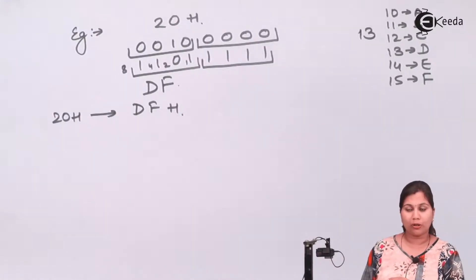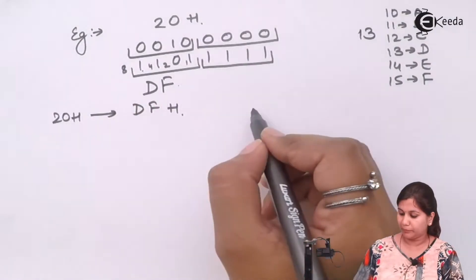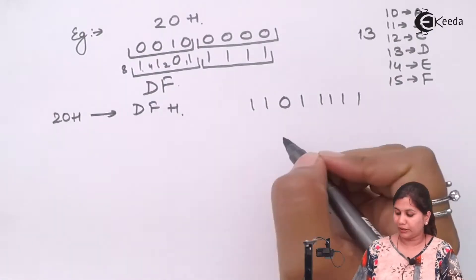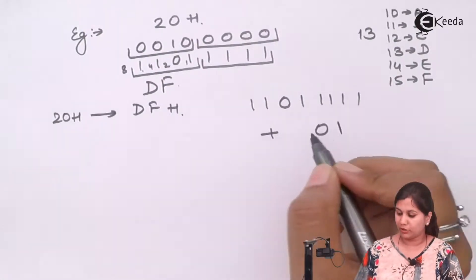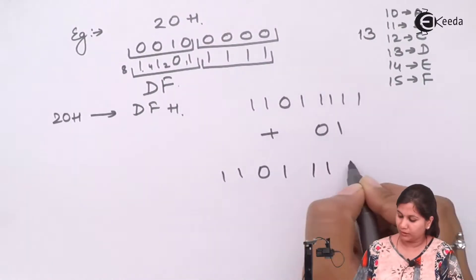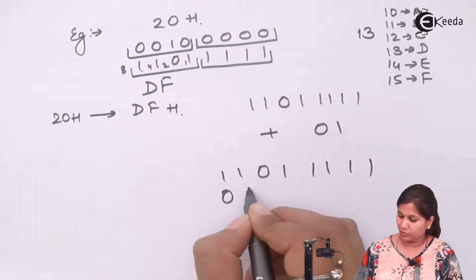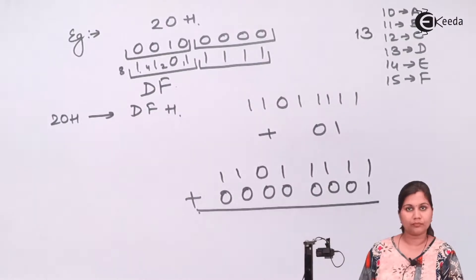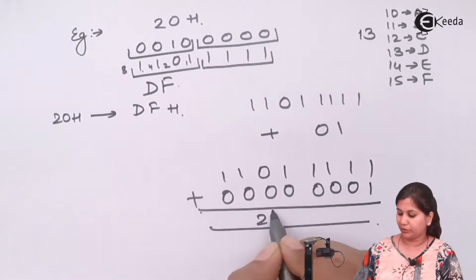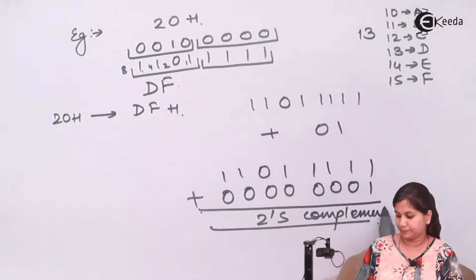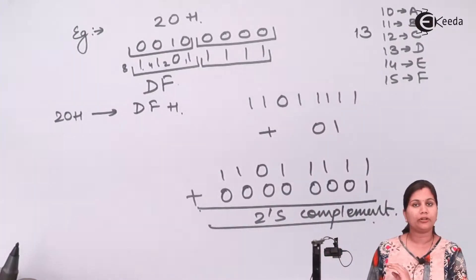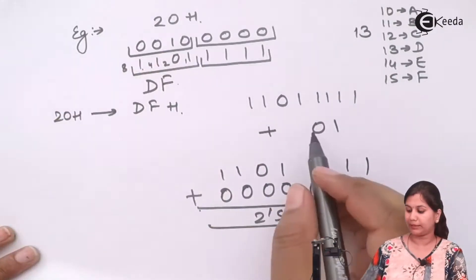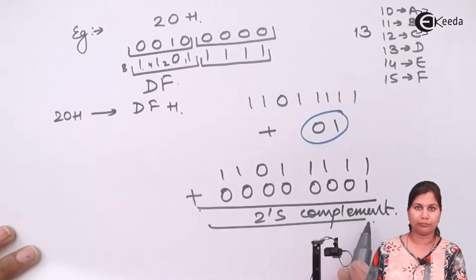Now to find the two's complement, after getting the one's complement DFH (binary 1101 1111), we add 01H (binary 0000 0001). Adding them gives 1110 0000, which is E0H. So the two's complement of 20H is E0H. This logic — find the one's complement then add 01 — is what we are going to use in our program.